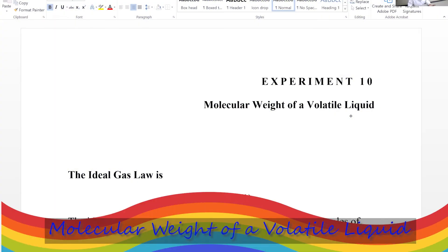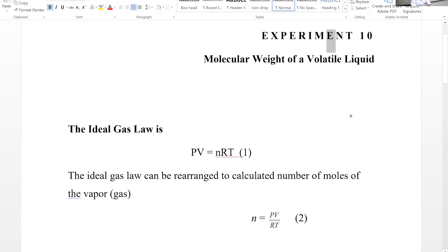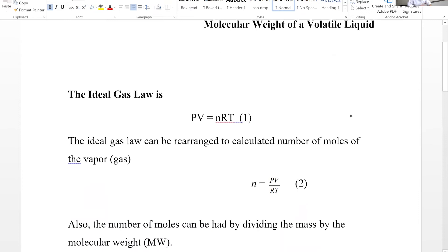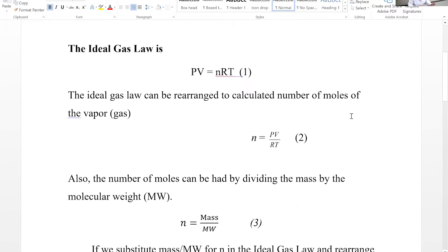We have discussions for Experiment 10, determining molecular weight of a volatile liquid. One of the methods that is practical in the lab to determine the molecular weight is use of ideal gas law. The condition is that the sample we are using must be volatile, with low enough boiling point that it can act somewhat like a gas.